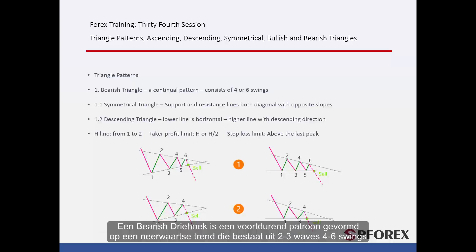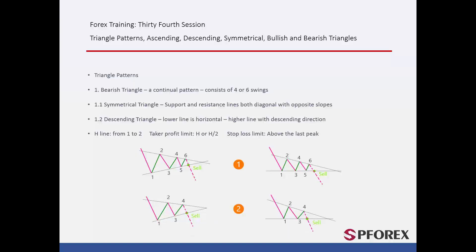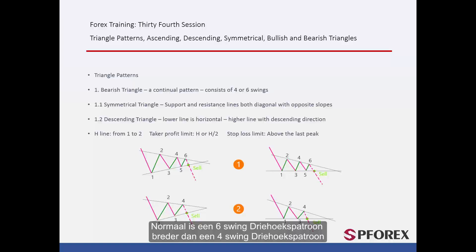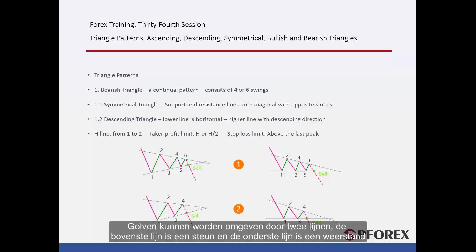A Bearish Triangle is a continuation pattern formed on a downtrend, consisting of 2–3 waves and 4–6 swings. Normally, a 6-swing triangle pattern is wider than a 4-swing triangle pattern. Waves can be surrounded by two lines; the upper line is a support and the lower line is a resistance. In a symmetrical triangle, both support and resistance lines are gradients with opposite angles.